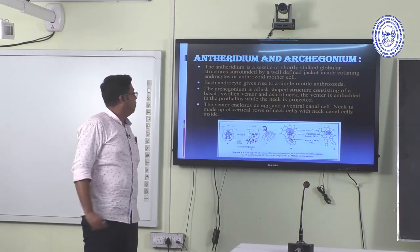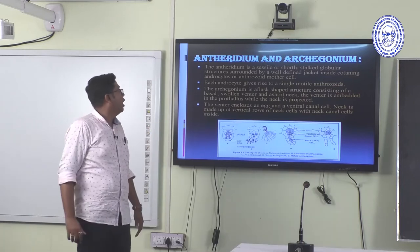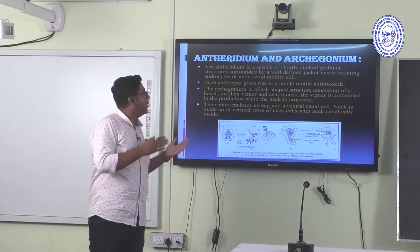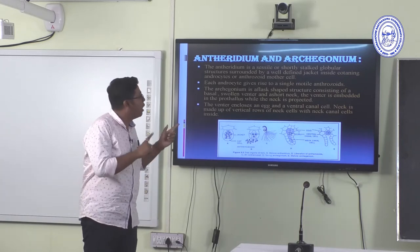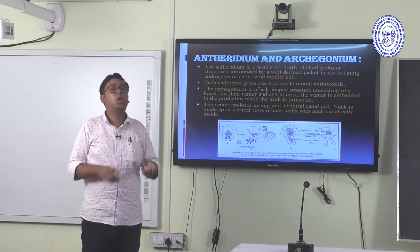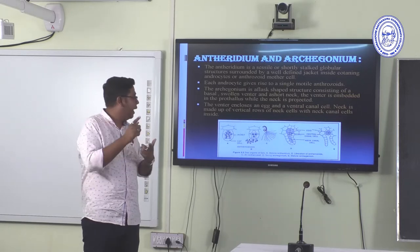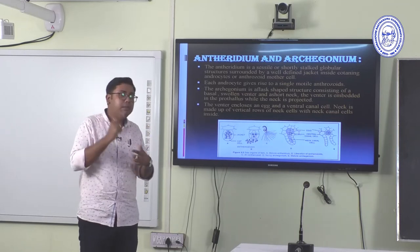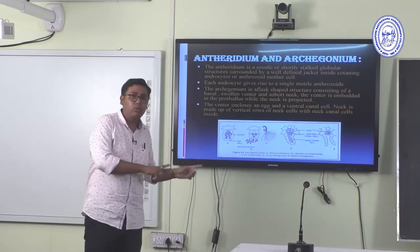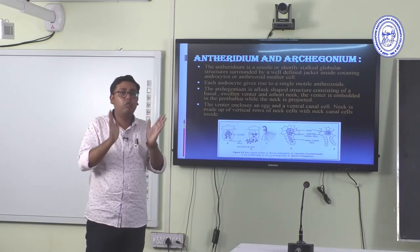The antheridium is a sessile or shortly stalked globular structure surrounded by a well-defined jacket layer, containing antherozoid mother cells. Each antherocyte gives rise to a single motile antherozoid. The archegonium is a flask-shaped structure with cover cells at the apex of the neck, containing neck cells, ventral cells, neck canal cells, and ventral canal cells. Both antheridia and archegonia are found in the gametophytic thallus.